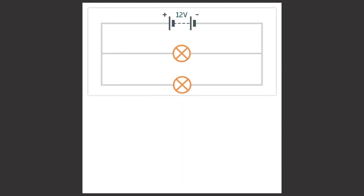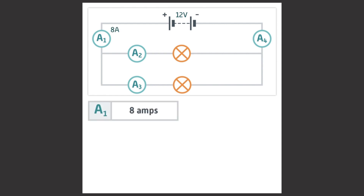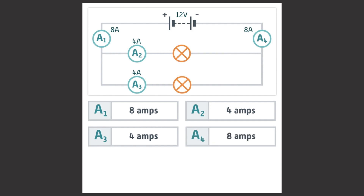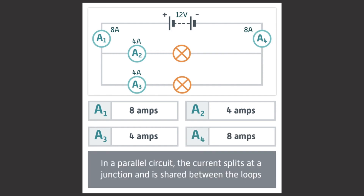Now let's look at current in a parallel circuit. Imagine we set up a circuit containing a 12 volt power supply and two lamps in parallel. Now we add ammeters A1, A2, A3 and A4. A1 is just after the cells before the circuit splits into two loops, A2 is in the first loop, A3 is in the second loop, and A4 is after the two loops have rejoined. Examples of current readings you may get are A1 equals 8 amps, A2 equals 4 amps, A3 equals 4 amps and A4 equals 8 amps. We find that in a parallel circuit, the current from the cells splits at a junction so that it is shared between the loops, and then rejoins when the loops rejoin.